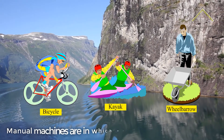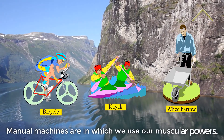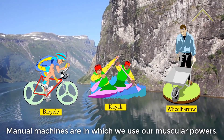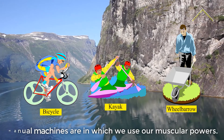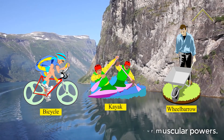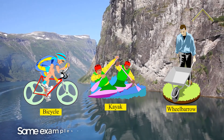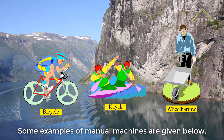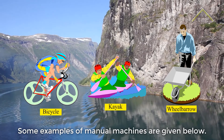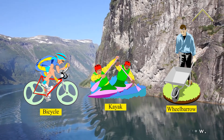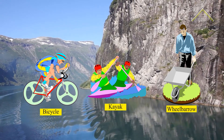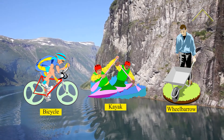Manual Machines are machines in which we use our muscular powers. Some examples of manual machines are given below: Bicycle, Kayak, and Wheelbarrow.